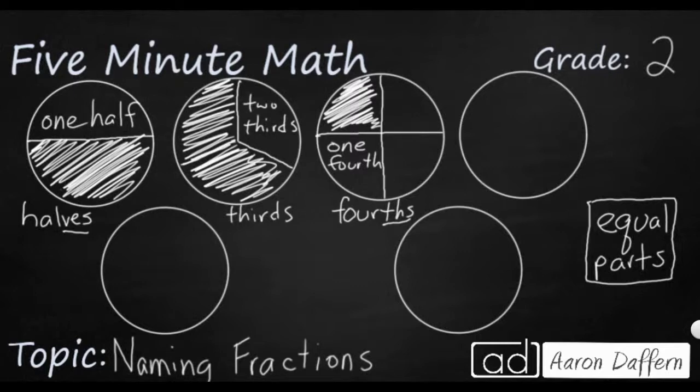Now we've got 2 equal parts, 3 equal parts, 4 equal parts. I'm going to skip the fifths. Those are really difficult to draw unless it's a rectangle, and you're not going to run into fifths very often. But I am going to do sixths.